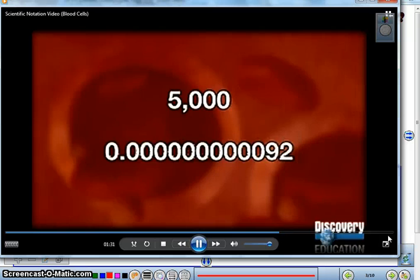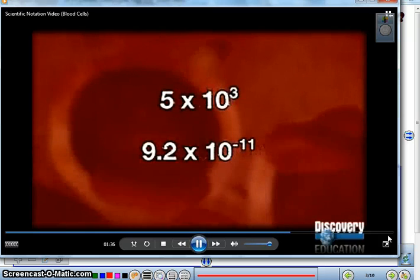Powers of 10 are used in scientific notation. The exponent on the 10 tells us how many times the base number is used in a multiplication. Let's go inside the human body. The average adult has about 5 liters of blood, or roughly 5,000 grams. Meanwhile, a single red blood cell's mass is about this number of grams. We can write these numbers in scientific notation.